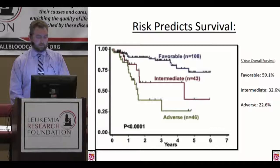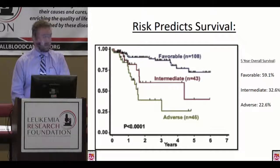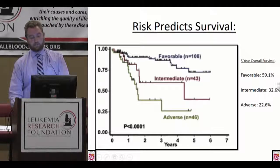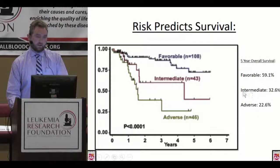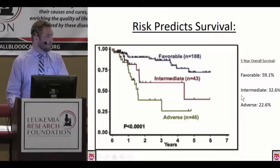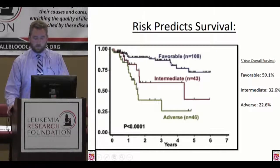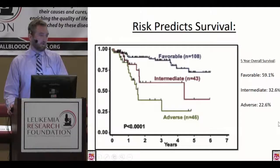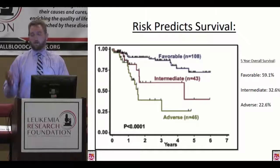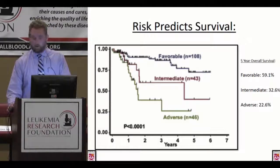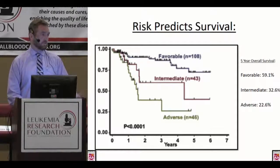We know this risk stratification predicts survival. Looking at those three groups, 60% of favorable-risk patients are alive five years out from diagnosis. In the intermediate group, only about a third are alive at five years. In the adverse group, the number is down closer to 20%. So in the long term, all this detail-oriented information really does dictate how our patients are doing, and we're utilizing this in discussions about treatment options — specifically why we might consider transplant in one patient as opposed to another.